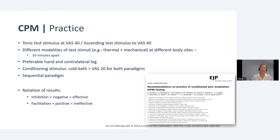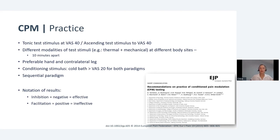They suggested that for the test stimulus, a tonic test stimulus should be used at VAS-40 — visual analog scale 40 out of 100 — or a descending test stimulus also at VAS-40 out of 100. They suggested using different modalities of test stimuli together, such as thermal and mechanical at different body sites, at least 10 minutes apart. They also recommended doing the test pain on the hand and conditioning on the contralateral leg, with test and conditioning stimuli being at different body sites. A conditioning stimulus of a cold bath at least VAS-20 for both paradigms was suggested, along with the sequential paradigm to avoid distraction bias.